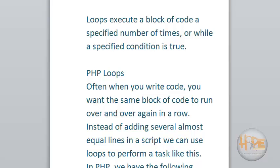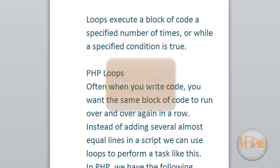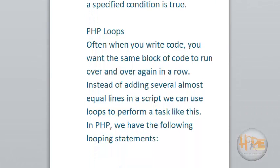Loops execute a block of code a specified number of times, or while a specified condition is true. Often when you write code, you want the same block of code to run over and over again in a row. Instead of adding several almost equal lines in a script, we can use loops to perform a task like this.